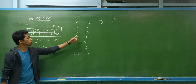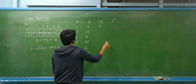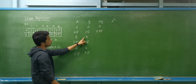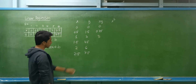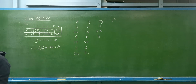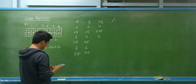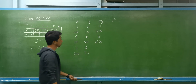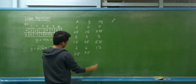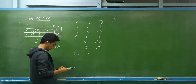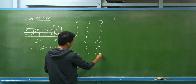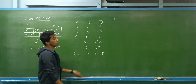Now let's compute the product of x and y. 0 × 0 = 0; 0.5 × 1.5 = 0.75; 1 × 3 = 3; 1.5 × 4.5 = 6.75; 2 × 6 = 12; and 2.5 × 7.5 = 18.75.